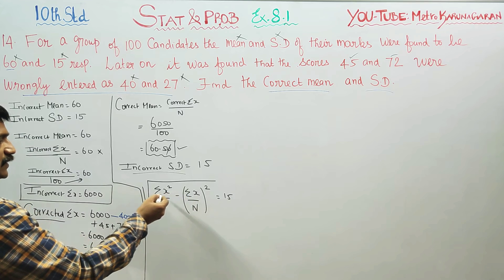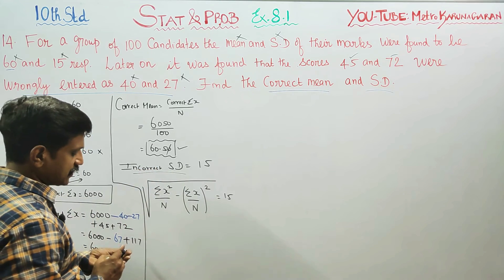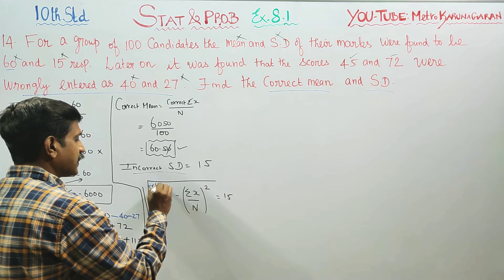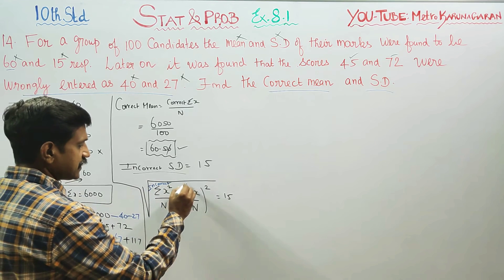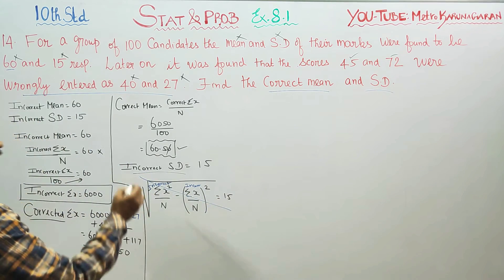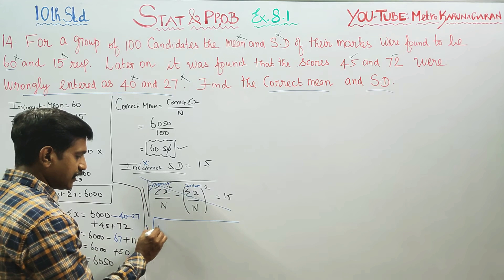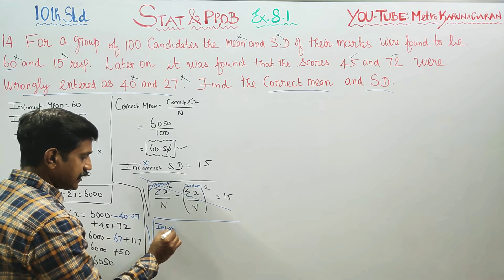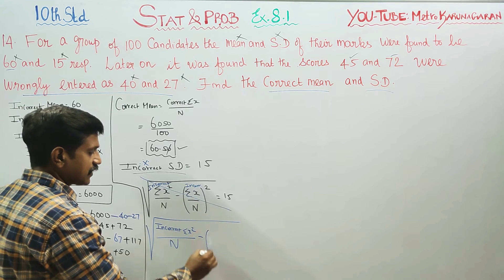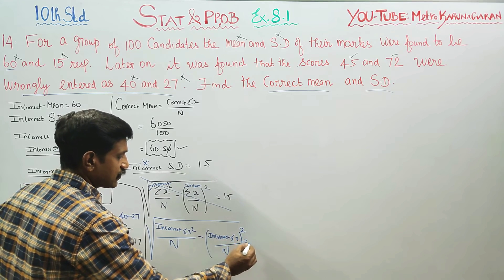From the formula, incorrect Sigma x² by N minus (incorrect Sigma x by N) whole squared equals 15. Squaring both sides: incorrect Sigma x² by N minus (Sigma x by N) whole squared equals 15 squared.